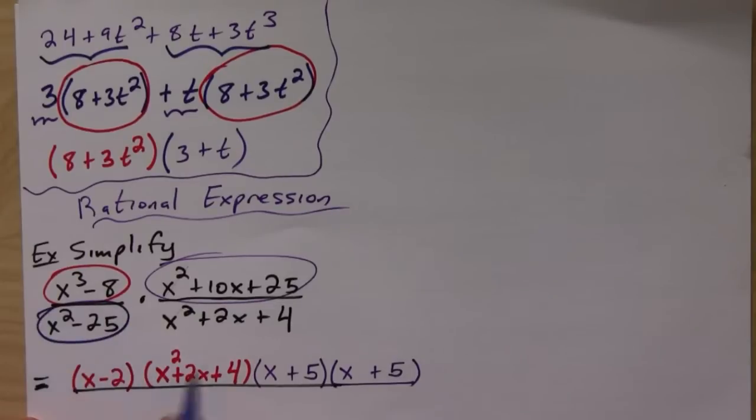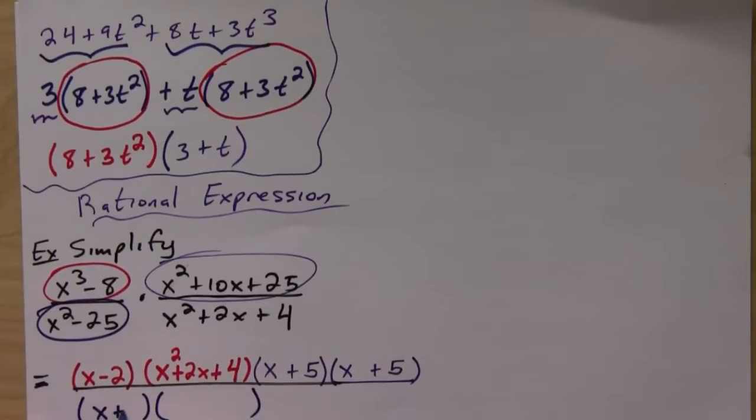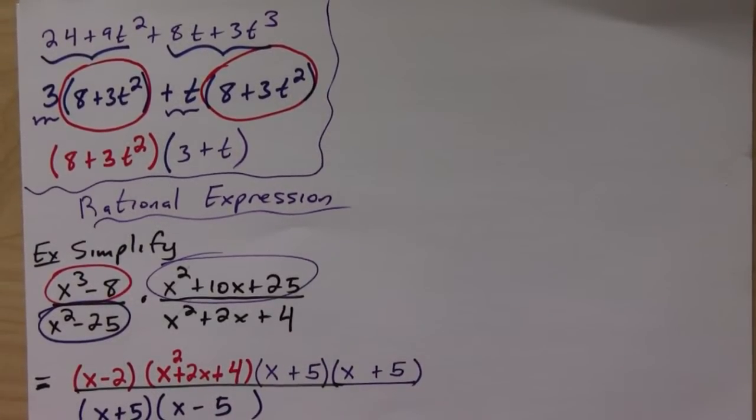Okay, so that's that one. And then we have x squared minus 25, well that's obviously a difference of squares, so this is going to be x plus 5, x minus 5. And then the last one...